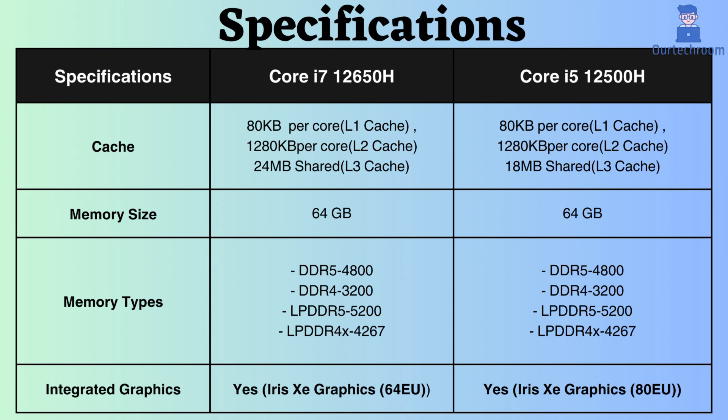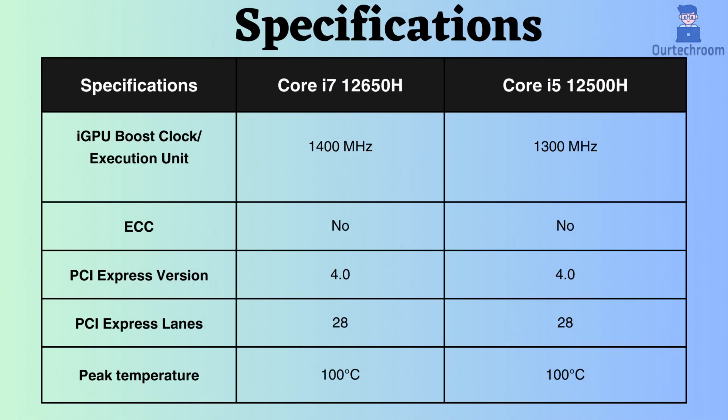Integrated graphics are supported by both processors, but the boost clock frequency of the graphics for the Core i7-12650H is higher than that of the Core i5-12500H. Neither of them supports ECC, making them unsuitable for critical systems like servers and workstations. They both support PCI version 4 and have 28 PCI lanes, meaning the processor can simultaneously support up to 28 different PCI devices.